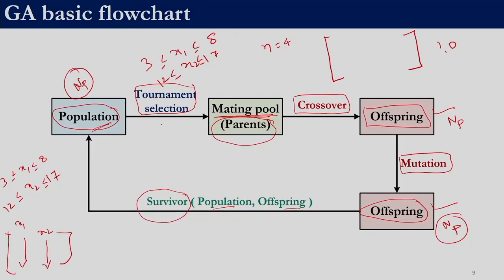There are various ways to determine the mating pool — we will look at only tournament selection. Similarly, for crossover there are various types; we will look at only single point crossover. In mutation there are various mutation strategies; we will look at one particular strategy. From this you can understand there are various variants of genetic algorithm. Saying you use 'genetic algorithm' is not complete information — you need to specify which selection strategy, which crossover strategy, and which mutation strategy.